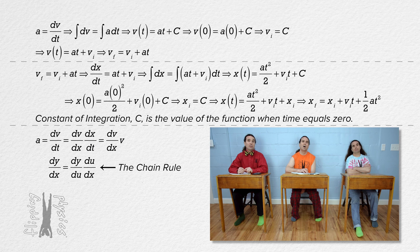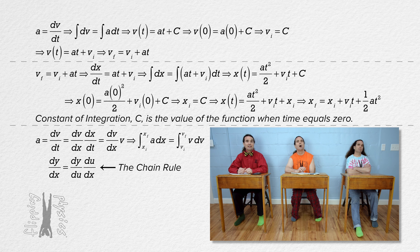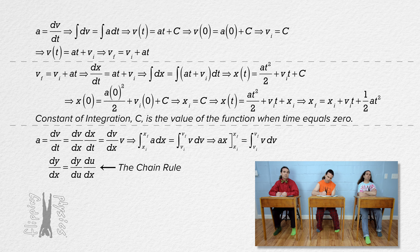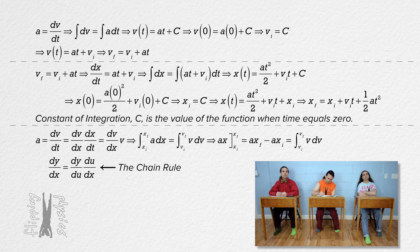That means we can multiply both sides by dx and get the definite integral of acceleration with respect to position from position initial to position final, equals the definite integral of velocity with respect to velocity from velocity initial to velocity final. The integral of acceleration with respect to position — acceleration is a constant — so that integral is just acceleration times position. Adding the limits and substituting gives us acceleration times position final minus acceleration times position initial, or acceleration times change in position.